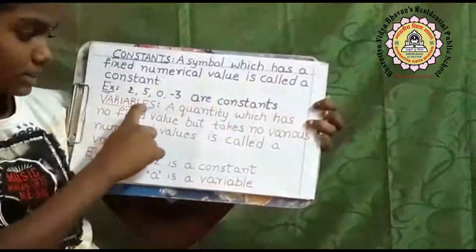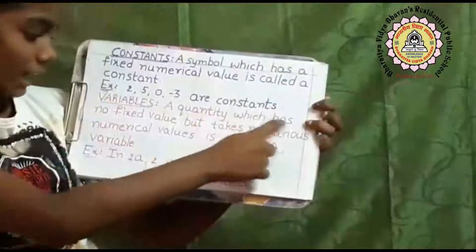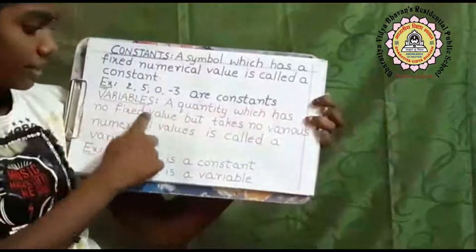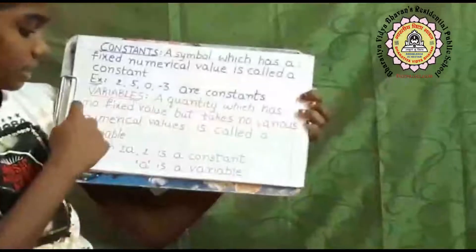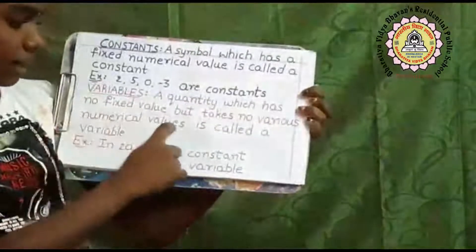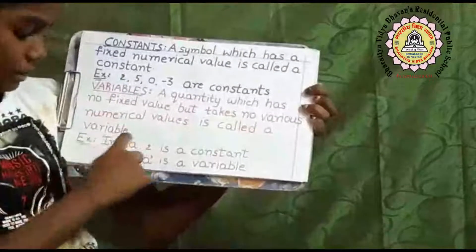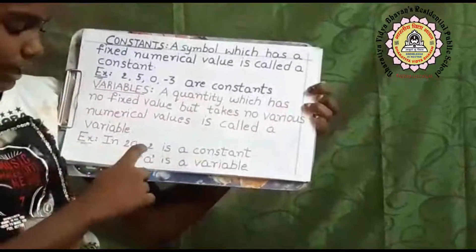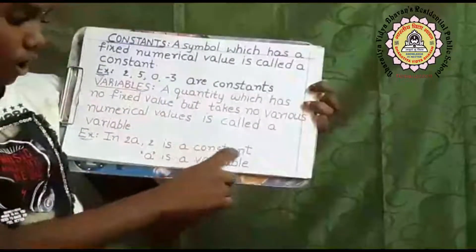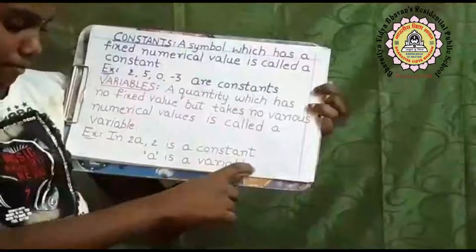Variables: a quantity which has no fixed value but takes various numerical values is called a variable. Example: in 2a, 2 is a constant and a is a variable.